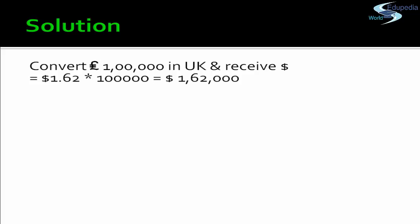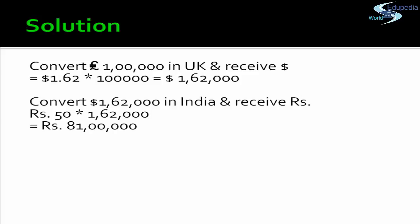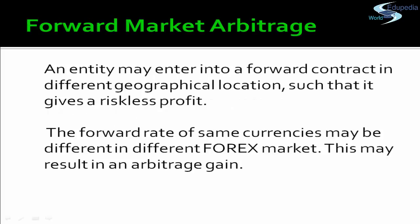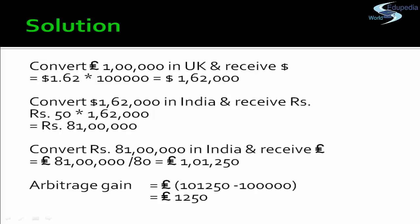You convert 1,00,000 pounds in the UK and receive USD 1,62,000. This dollar amount is then converted into Indian rupees, giving ₹81,00,000. These ₹81,00,000 are then converted back into pounds, which equals 1,01,250 pounds. You started with 1,00,000 pounds and received 1,01,250 pounds, so the arbitrageur makes a profit of 1,250 pounds.